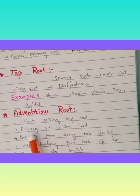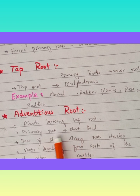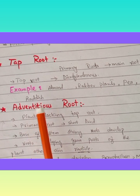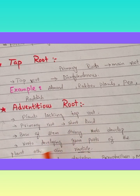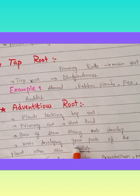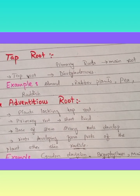Adventitious roots occur in those plants which lack the taproot. The primary root here is short-lived and does not persist throughout the life of a plant, so the plant forms another root system called adventitious roots. These roots arise from the base of a stem. Any root that develops from any part of the plant other than the radicle is known as an adventitious root. If a root arises from the radicle it is called a taproot, but if it arises from any other part of the plant it is called adventitious. Examples are Cynodon dactylon (a grass), Bryophyllum, and maize.